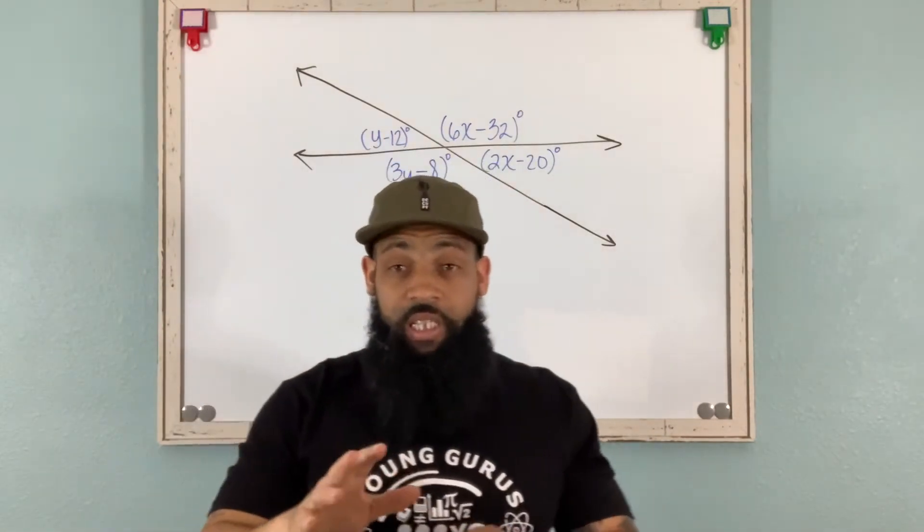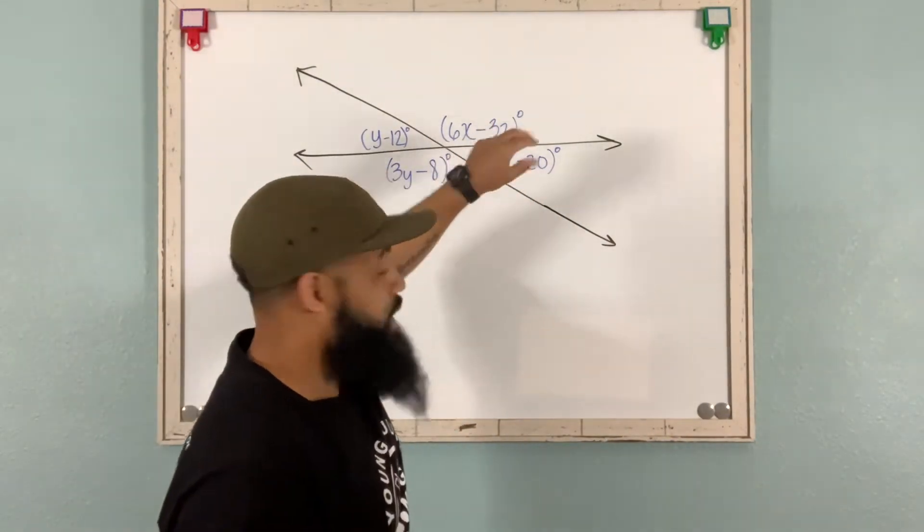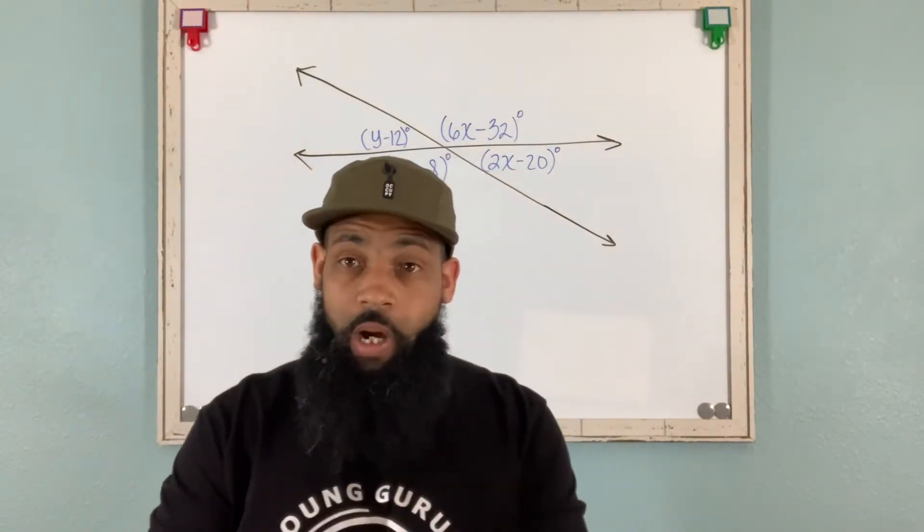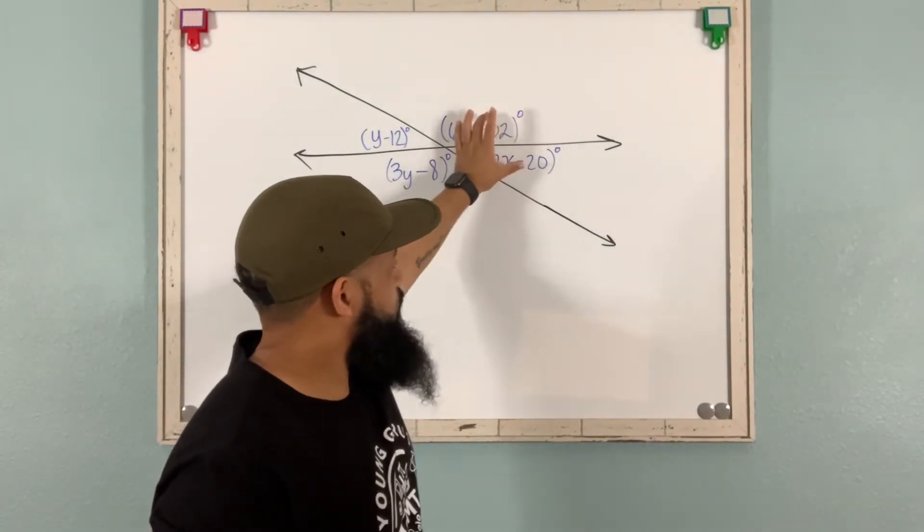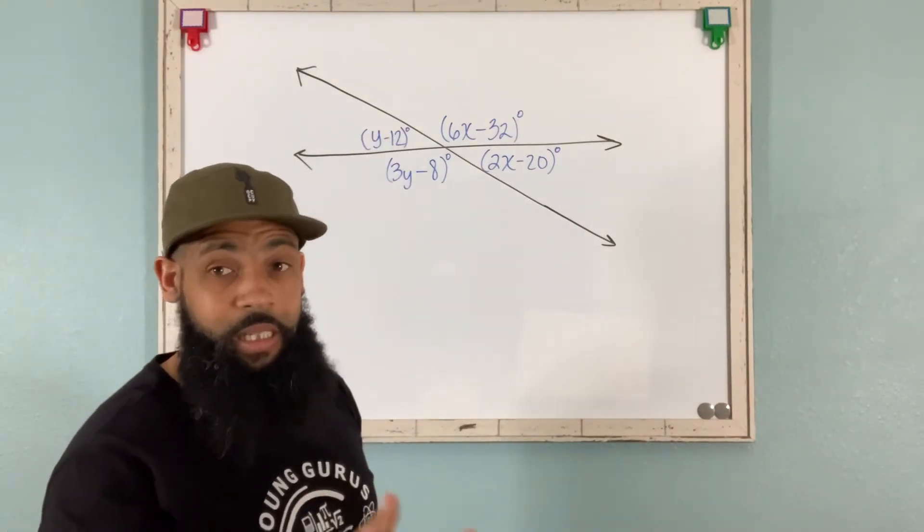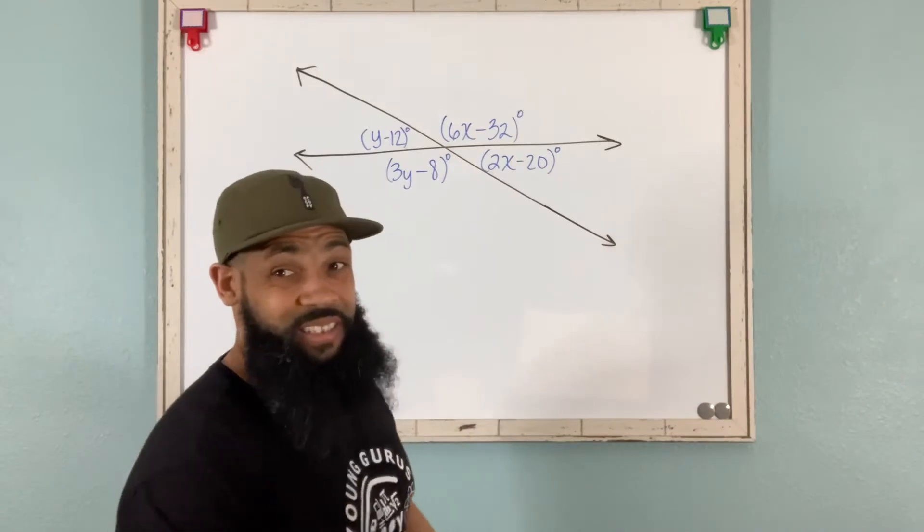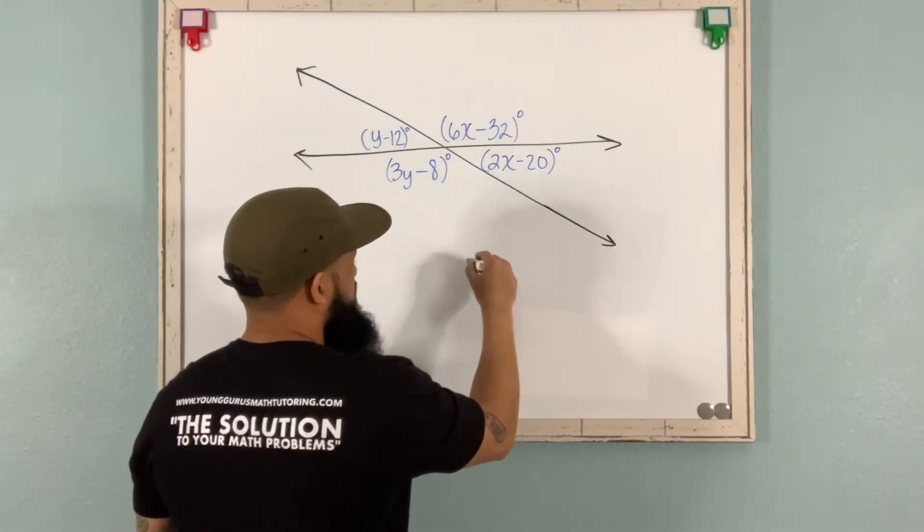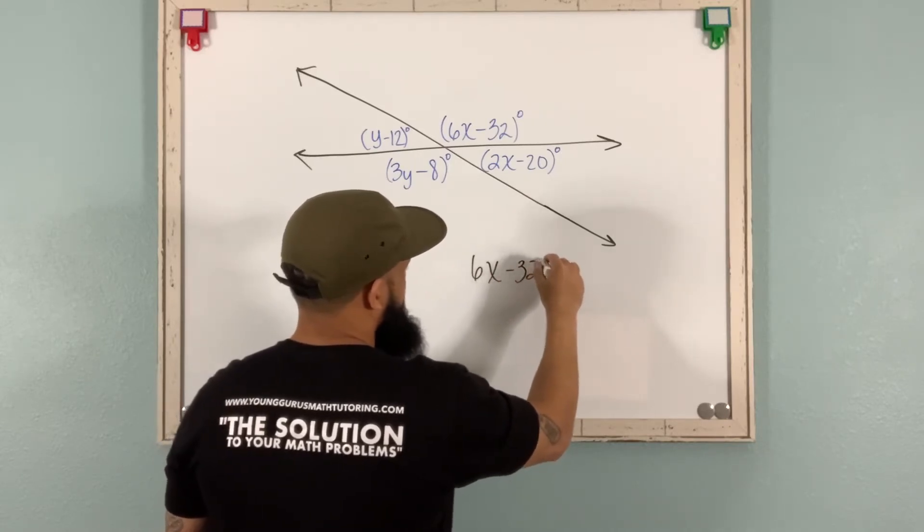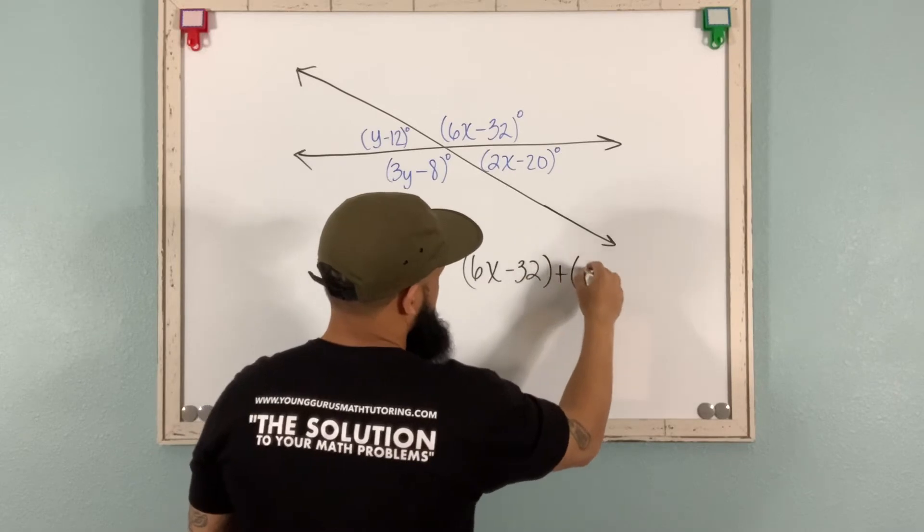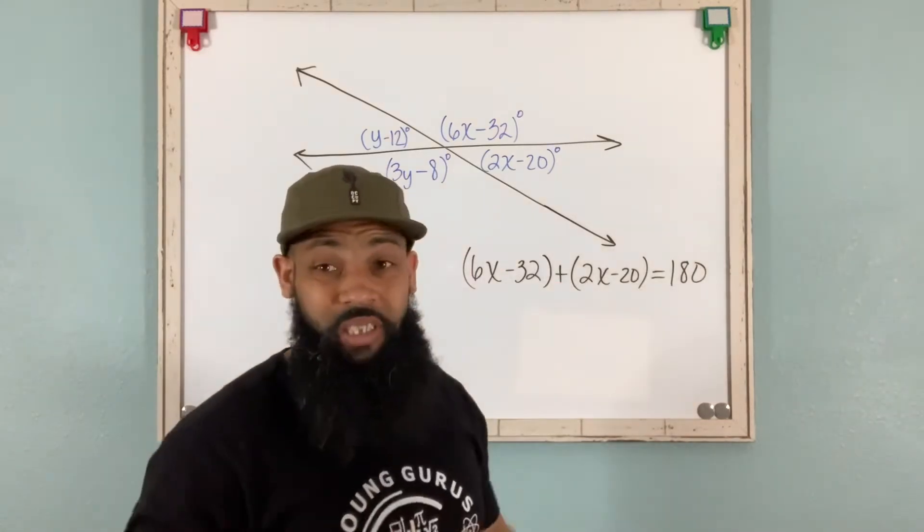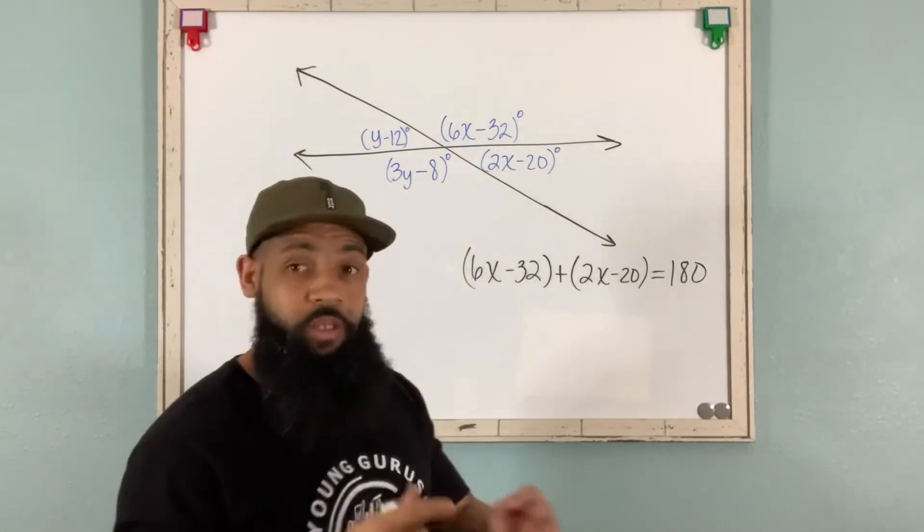Now we're going to step it up a notch in this example. Notice we have x variables and y variables. And our goal is to find the value of x and y. But notice these two expressions that represent these angles are a linear pair. The same thing, the two expressions with the variable y represent a linear pair. So remember, linear pair has a sum of 180. So I'm going to say 6x minus 32 plus 2x minus 20 equal 180. I'm keeping the parentheses for now just in case so we don't mess up with any signs.